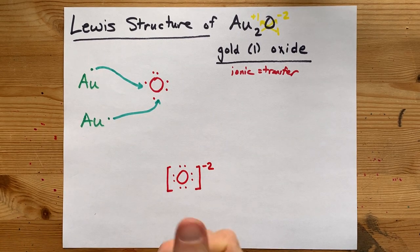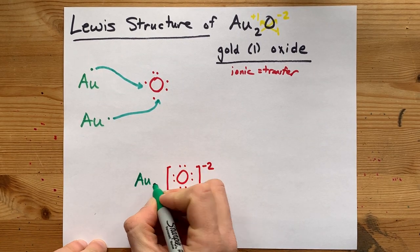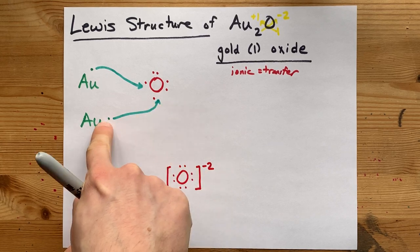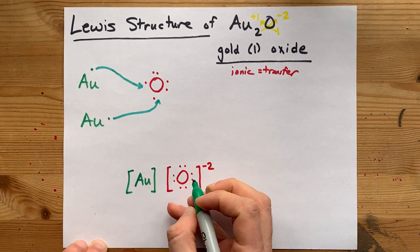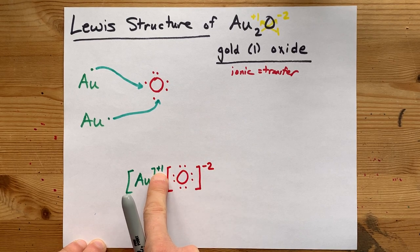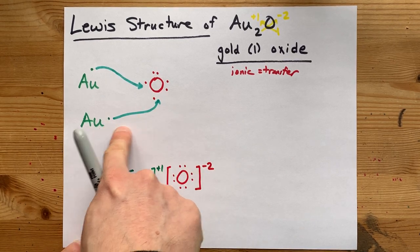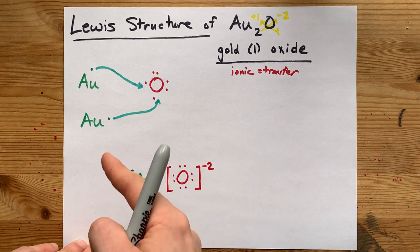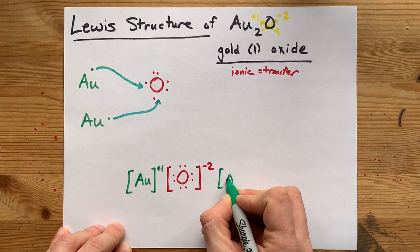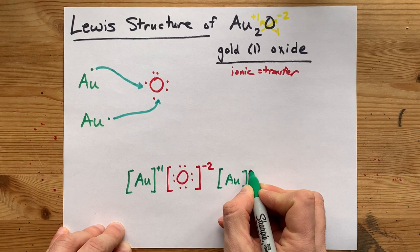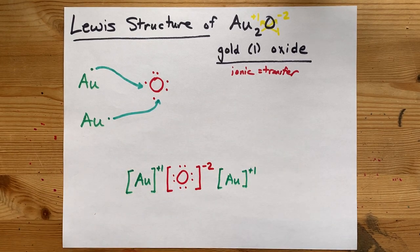Now we need to draw the golds. The golds were Au, but they gave away their one electron each, so don't draw any electrons around them. Give each a +1 charge, because it lost a negatively charged electron. You'll have to draw it twice, because you required two of them to balance out with the oxygen.